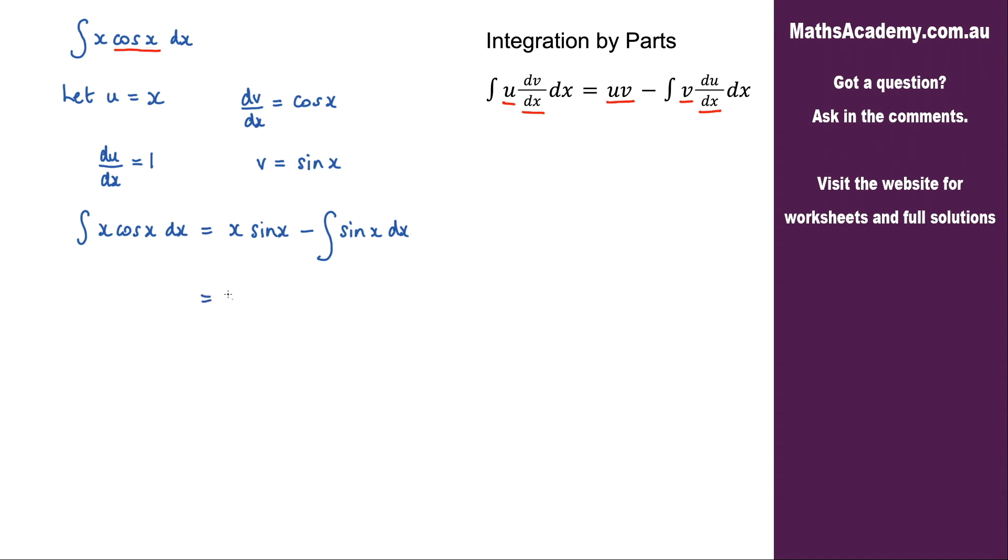Okay so what we've got is x sine x minus the integral of sine x is negative cosine x. So we've got another negative which will make this a positive, and then we've got cosine x and we just need to add on the constant of integration.